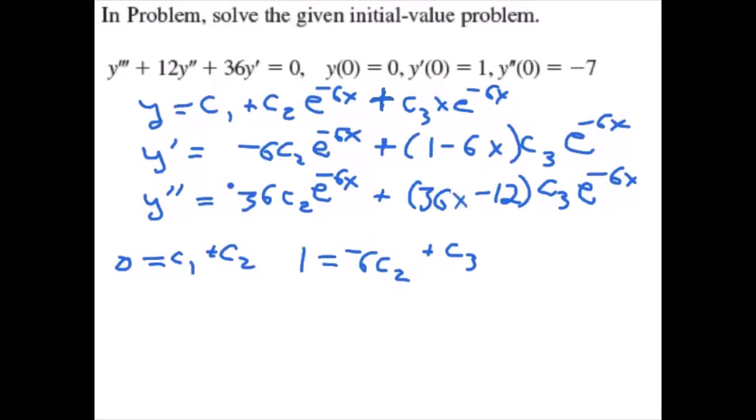Our last initial condition, y''(0) = -7, so we have -7 = 36c₂ - 12c₃ (remember the exponential terms go to 1).